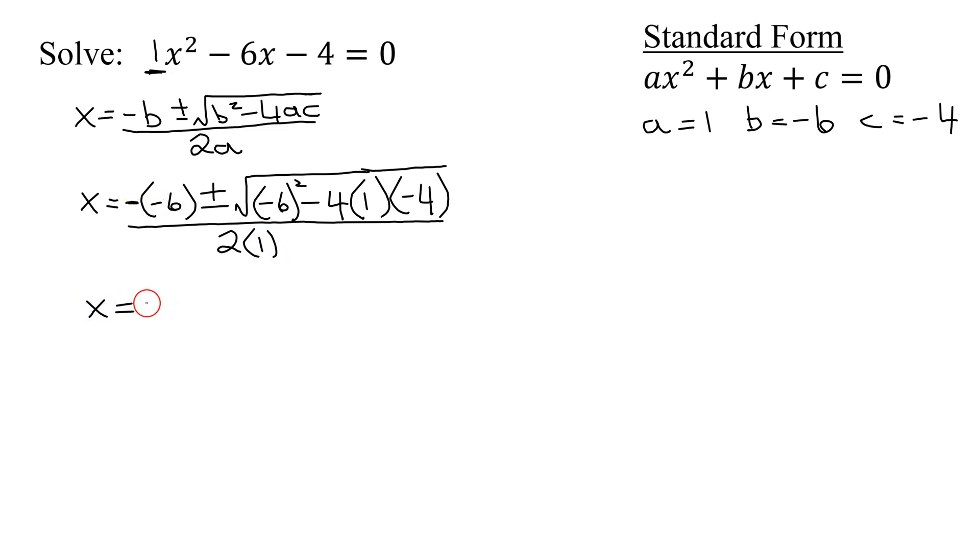So now all we have to do is simplify. The opposite of negative 6 is positive 6. Plus or minus the square root of. You need to square the negative 6 first. So negative 6 times negative 6 is positive 36. Then I have negative 4 times 1 is negative 4. And negative 4 times negative 4 is positive 16. All divided by 2 times 1 is 2.